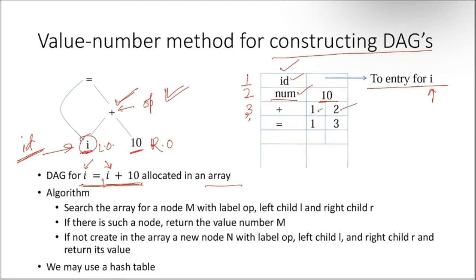At the fourth index, we are entering an assignment operator. The right argument will be assigned to the left argument. The left argument is index 1, meaning the id i. And index 3 gives the result of index 1 plus index 2, meaning id plus 10, which means i plus 10. This result is going to be stored into i. This is how we can maintain a DAG in a data structure like an array.